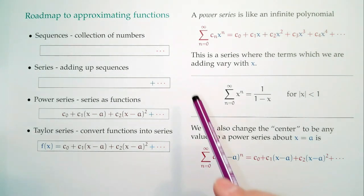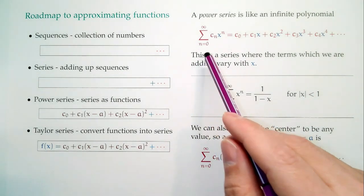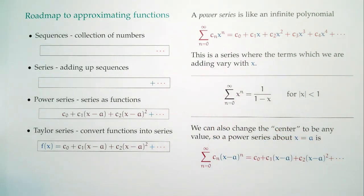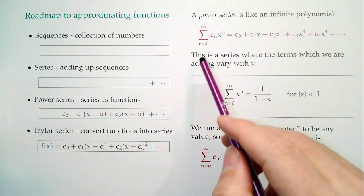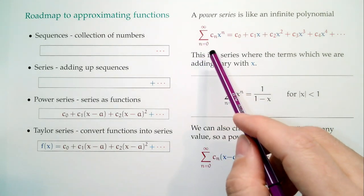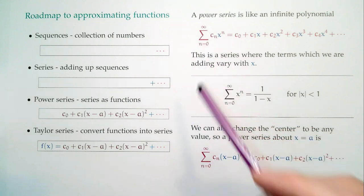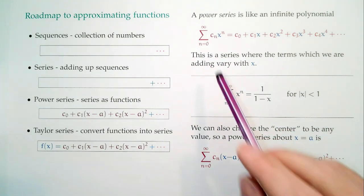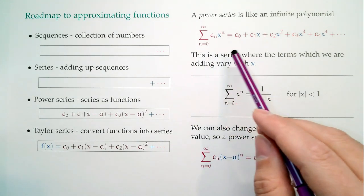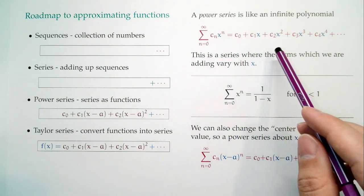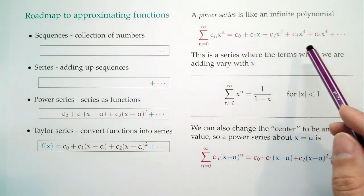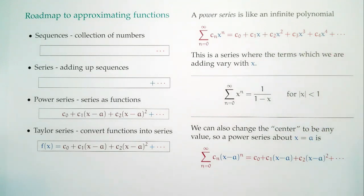So I have a sum. We usually start it at zero — we almost never start at negative values. It's okay if we skip the first few values. Sum from zero to infinity of some number c sub n — we think of the c's as acting like the coefficients — times x to the n. So c_0 plus c_1 x plus c_2 x squared, and so forth and so on.